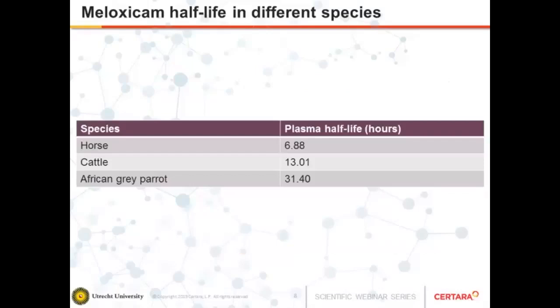As you can see from these results that I extracted from those publications, it's very difficult to predict what the pharmacokinetics of one species will be based on the other. If we look here, the half-life of meloxicam is twice as long in cattle compared to the horse, despite these being two species of animal that have similar body weight and size. And then the half-life is even longer in the African grey parrot, which goes against the general principle of allometric scaling.